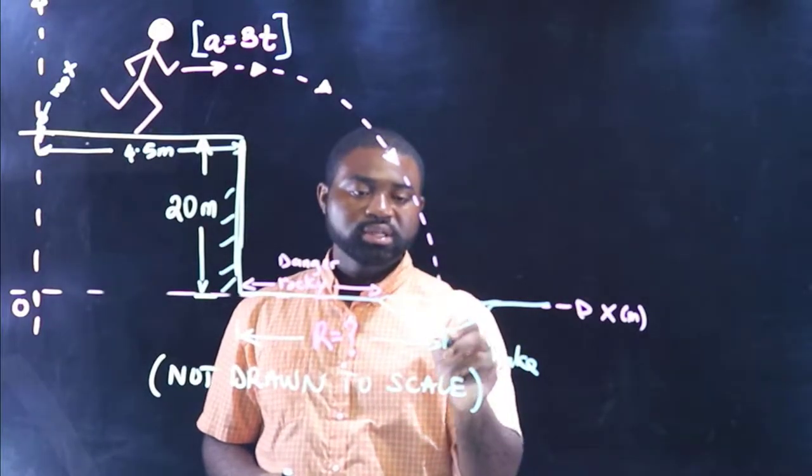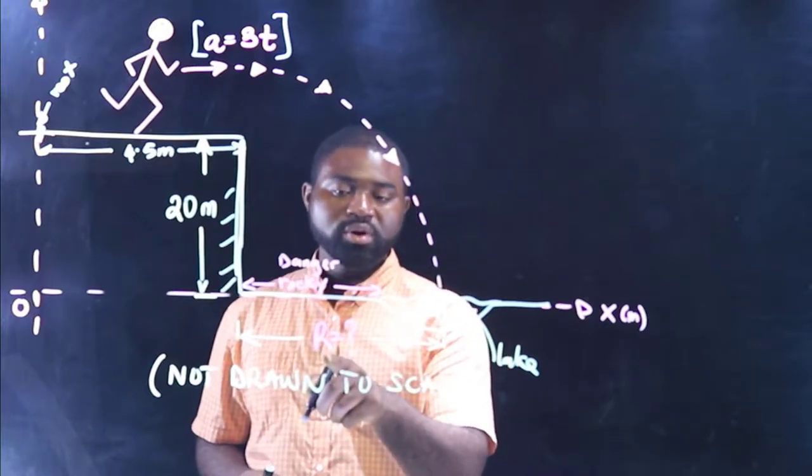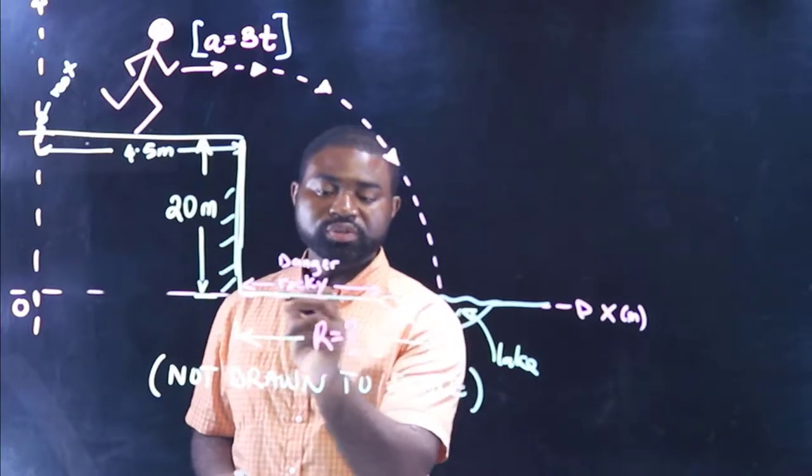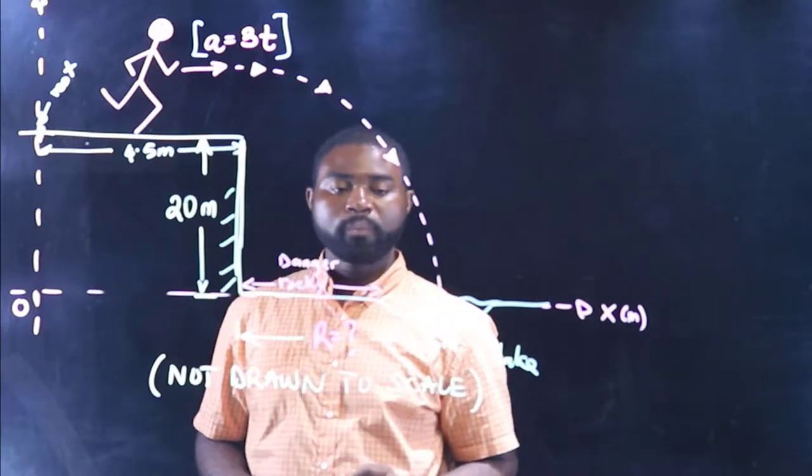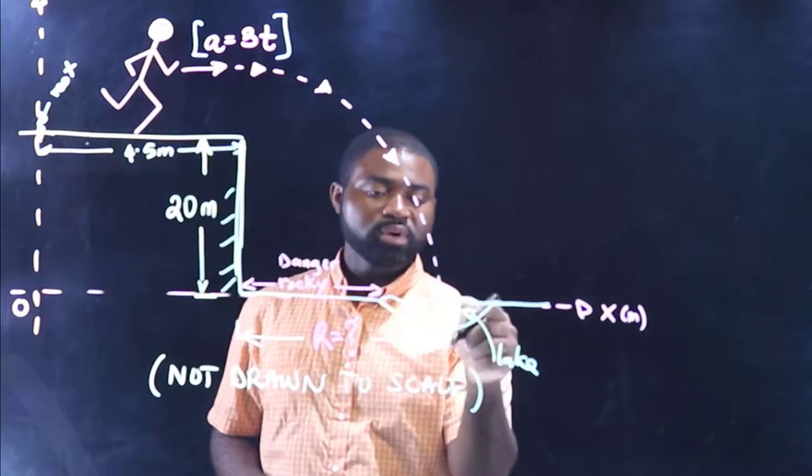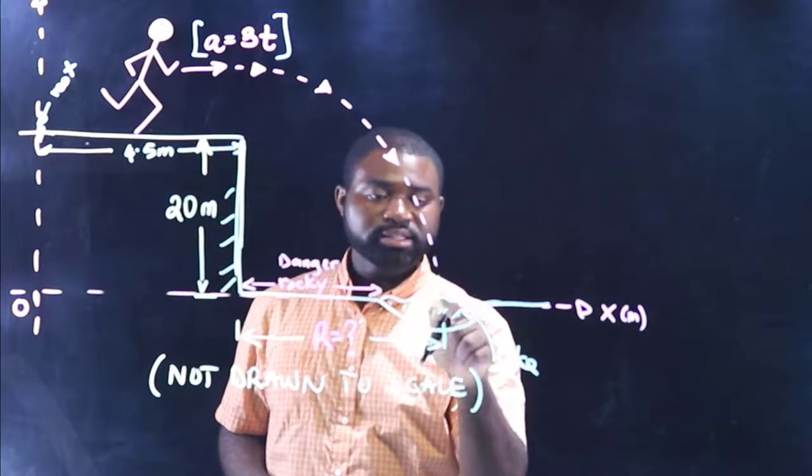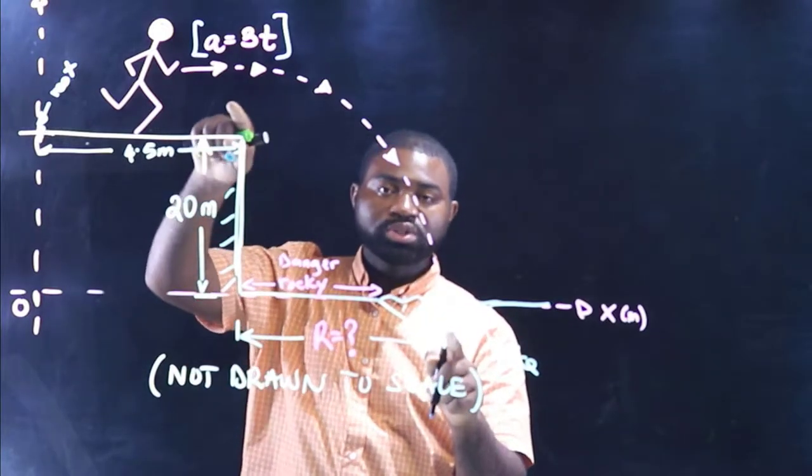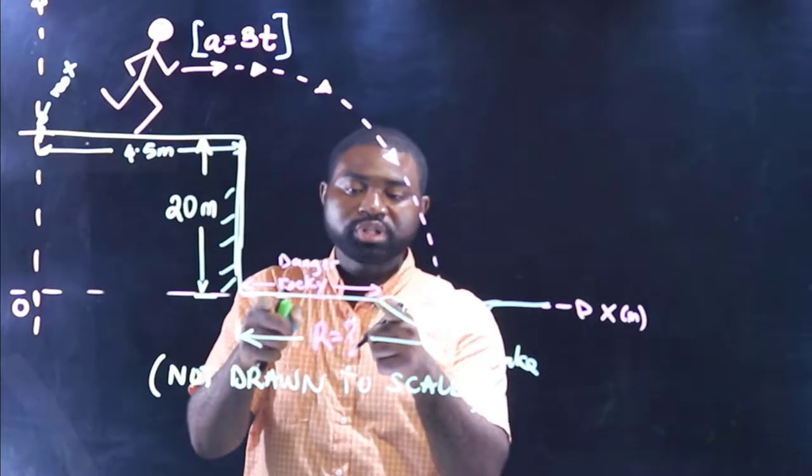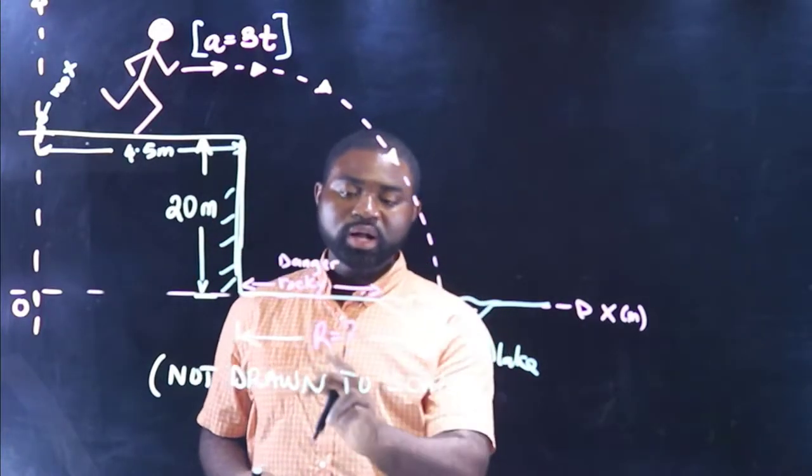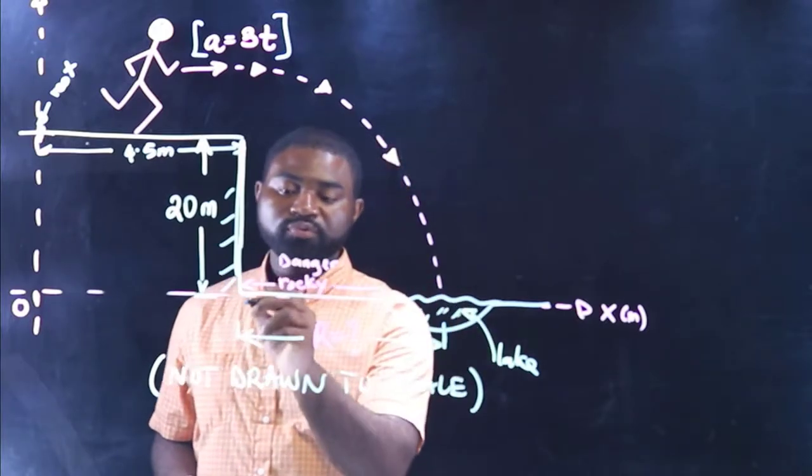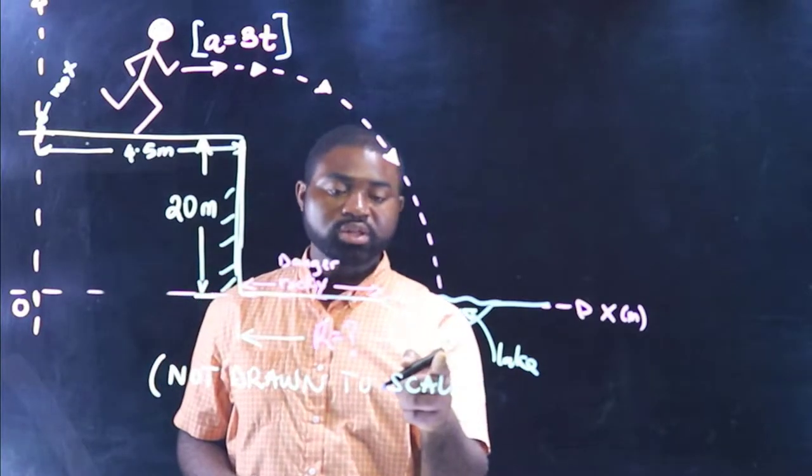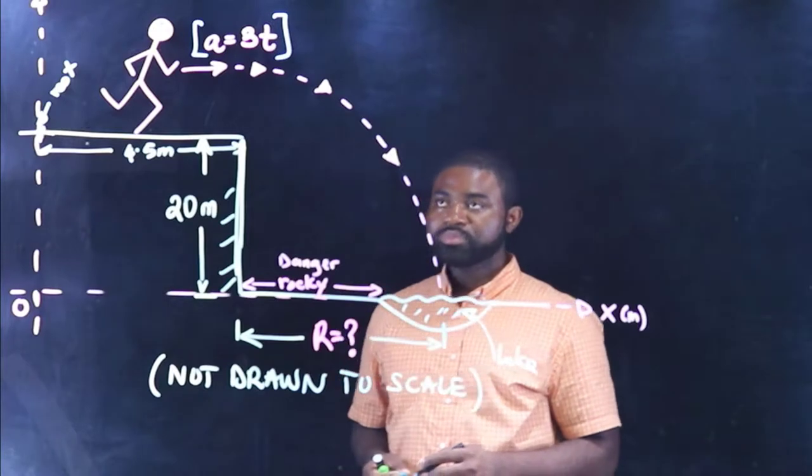So we have a lake, this is our lake, and he wants to jump inside the lake but he must attain a certain initial horizontal velocity so that he can avoid this rocky portion. So we need to calculate that distance R from the foot of the cliff to the point in the lake where he touched down on the water.